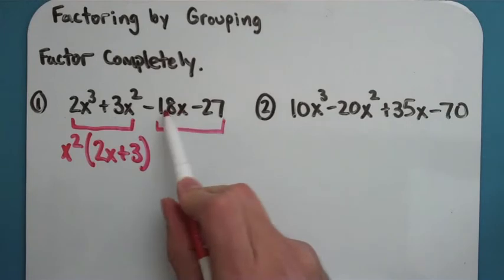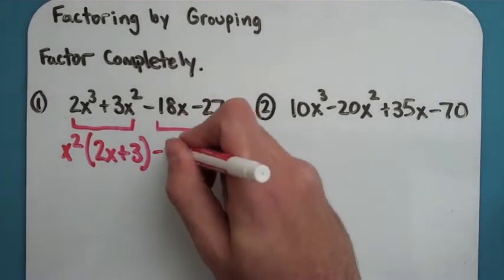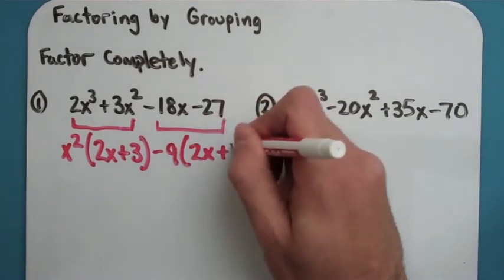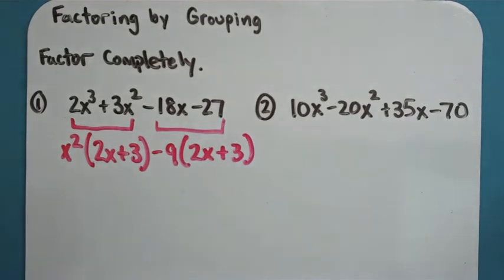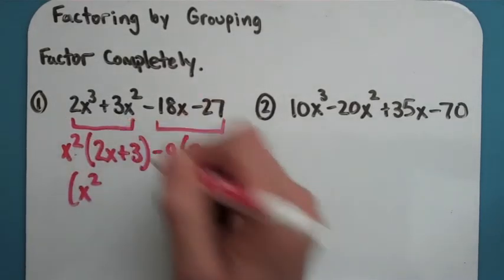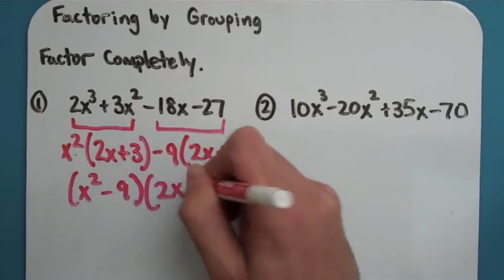On my second two terms I can take out a 9, and since this guy is negative here I will make it a negative 9, and I get a 2x and then it'll be plus 3 over here. Now as luck would have it these parentheses do match. So we can treat this almost like a magic numbers problem where I get my first parentheses, the outside parts, it'll be x squared minus 9, and this guy over here is 2x plus 3.